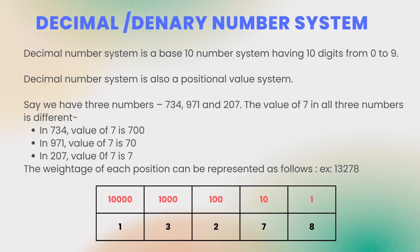Let's take an example to understand this. Say we have three numbers: 734, 971, and 207. The value of 7 in all three numbers is different. In 734, the value of 7 is 700. In 971, the value of 7 is 70. In 207, the value of 7 is 7.